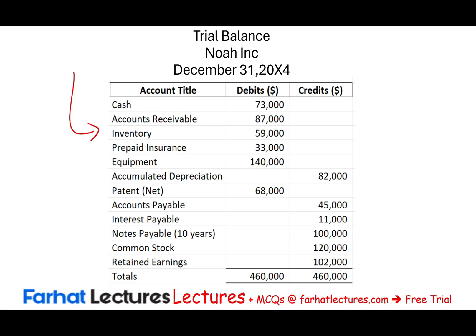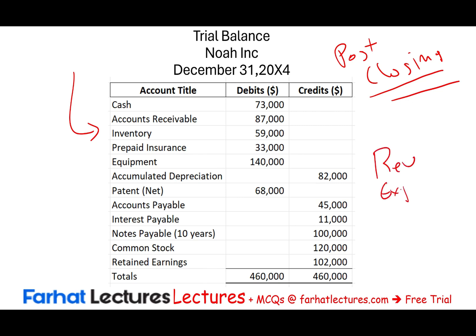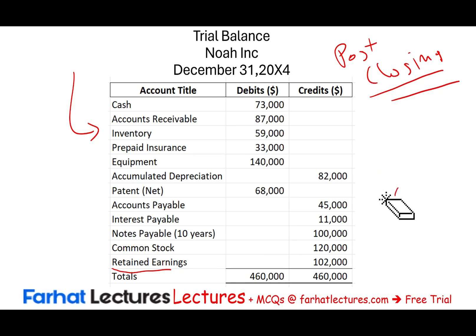This trial balance is a post-closing trial balance. How would you know whether it's post-closing or not? If you notice, we don't have any revenue accounts, we don't have any expenses, and we don't have any dividends. We stop at retained earnings — we don't have additional accounts. This means it only includes the permanent accounts.